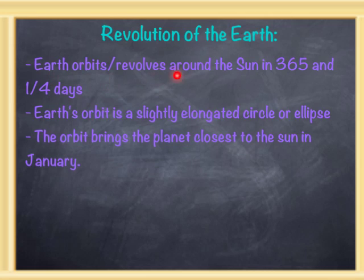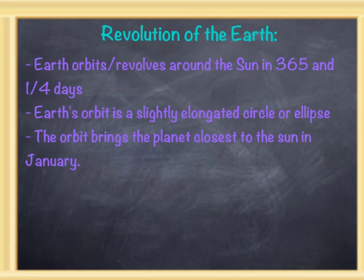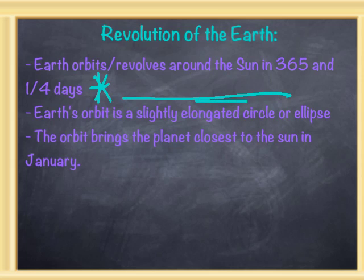The Earth's orbit revolves around the Sun in 365 and one-fourth days. Now one-fourth day may sound a little funny, and we don't have one-fourth days, but there is a way for us to have those one-fourth days added up. If you know the answer, put your answer down on your foldable.